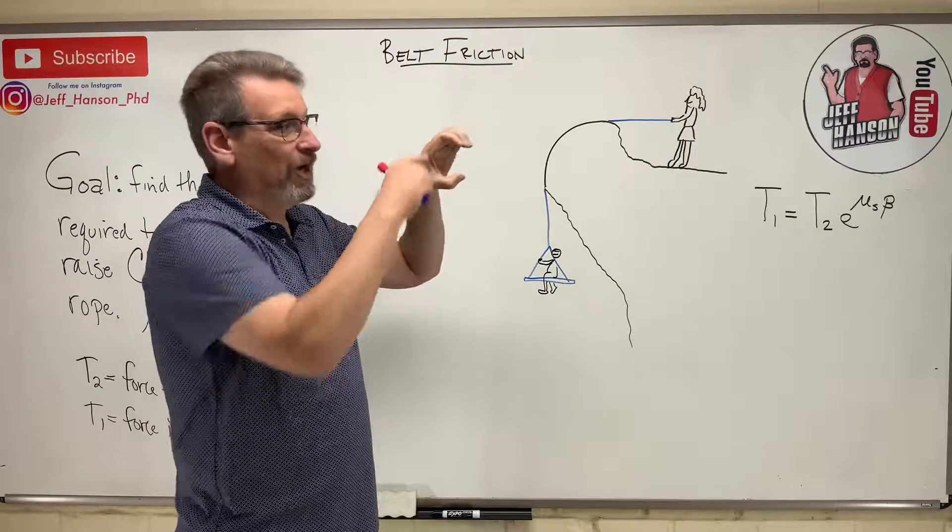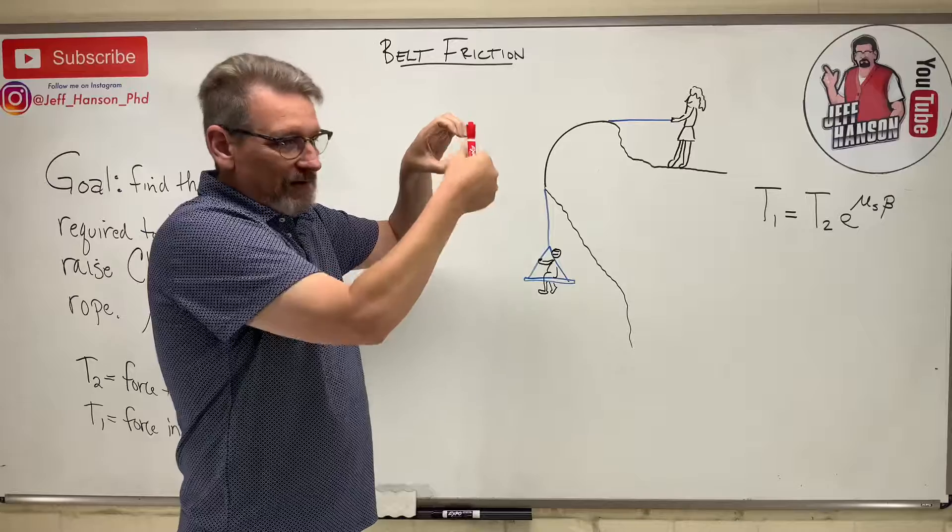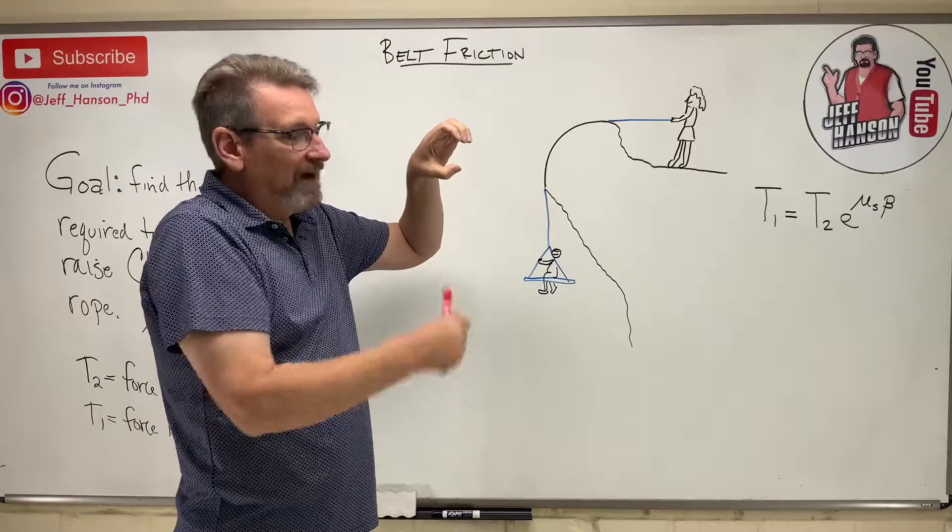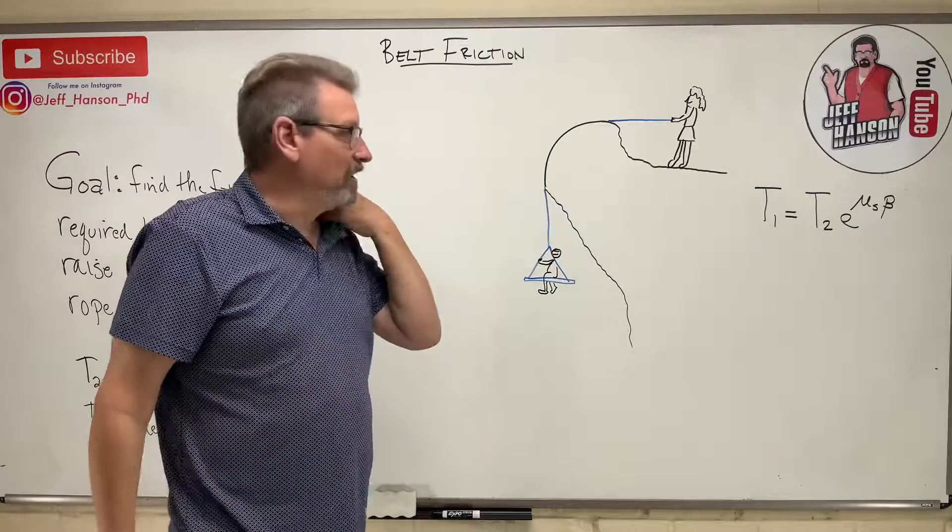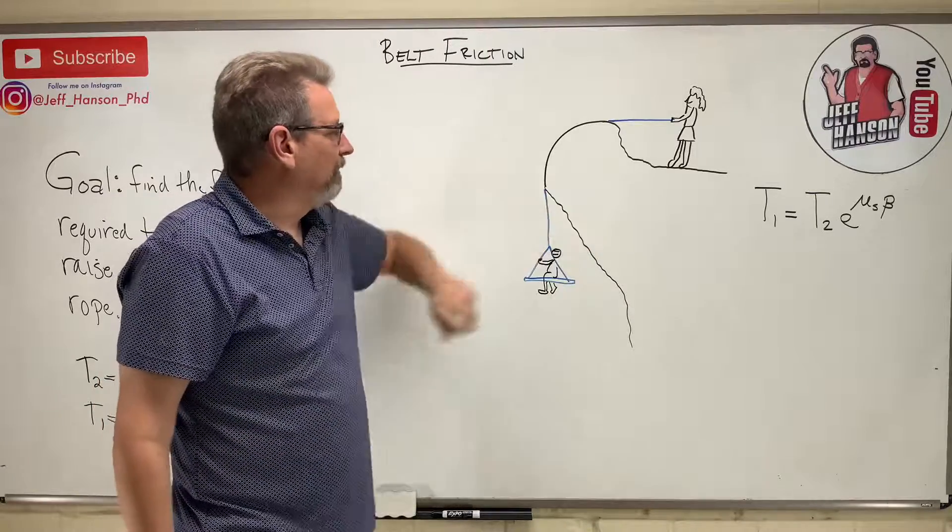If I have a pulley and a rope going around, let's say the pulley gets stuck, then as the rope goes around that pulley it has to slide across that pulley. Well there's some friction there. How do you calculate what that's going to be?